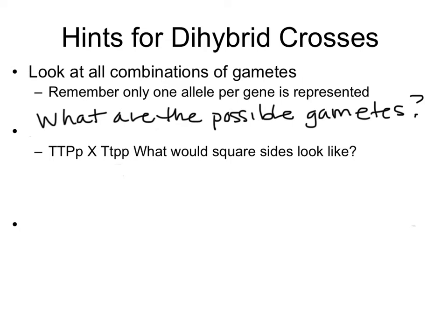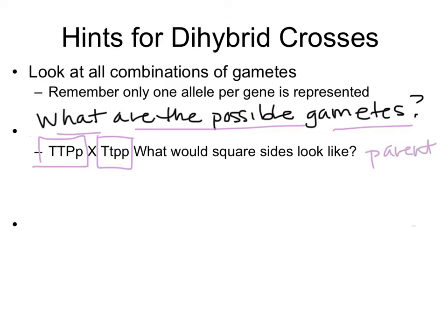Here are some hints for dihybrid crosses — specifically, what are all the possible gametes you can get from a certain parent? For example, what about a cross between this parent and this parent? I'm calling it a parent, not parental, because just a cross doesn't imply anything. You need to look at the genotype or be told something about a phenotype. Not parental, not true breeding — just some cross of two traits, like tall and purple.